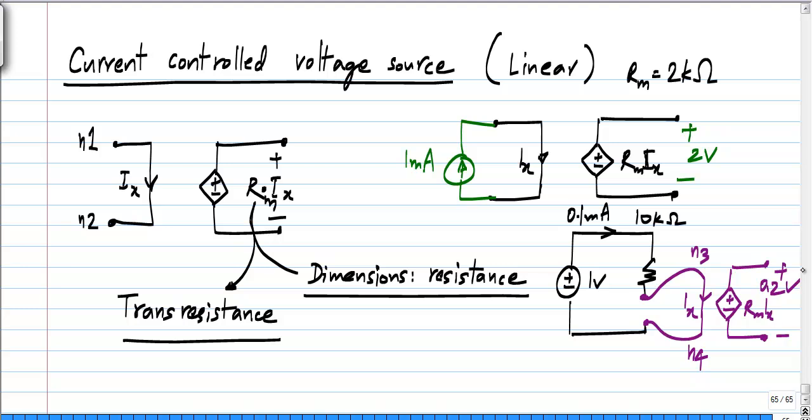That is the meaning of this. Typically you do not show this breaking of the connection and inserting it like this. The way this circuit will normally be shown is simply as follows. We had this 1 volt and 10 kilo ohm; this could be any circuit anywhere.